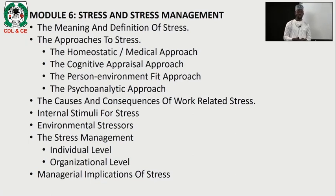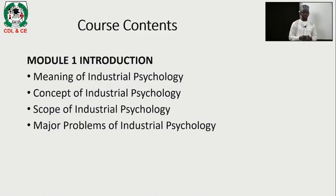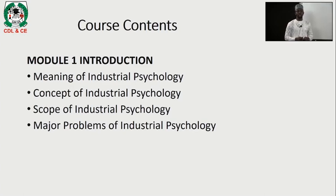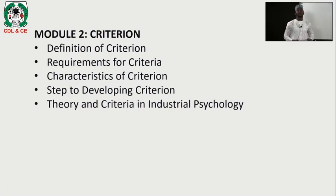For the purpose of this course, students are going to be exposed to: first, the scope of industrial psychology, the concept of industrial psychology, and the various problems posed to various industries within the purview of industrial psychology. Secondly, we are going to look at criterion — how we define results, how we determine that a job is well done, how we develop those criteria, and the various understandings of criterion within the industrial sector using the psychological perspective.